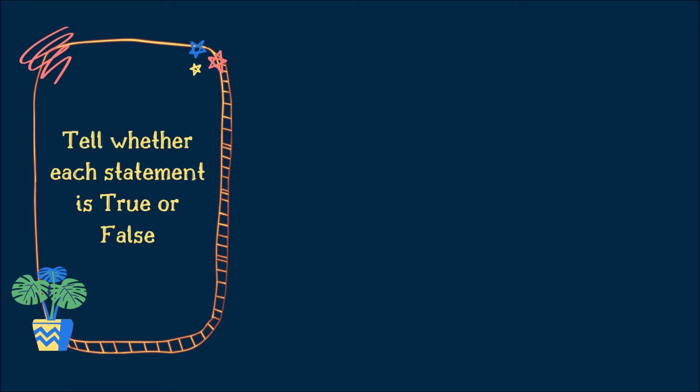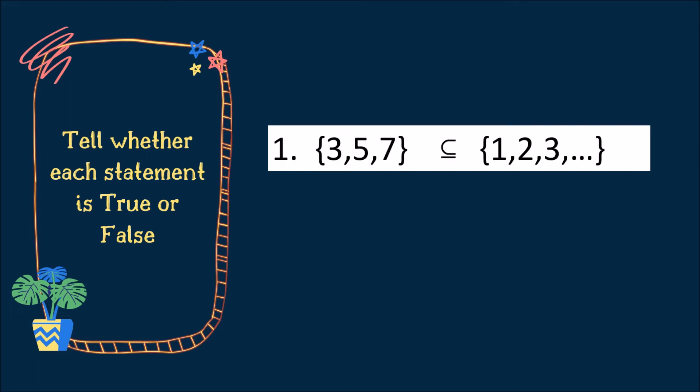Now let's have another set of activity. Tell whether each statement is true or false. Number 1. Set with elements 3, 5, and 7 is a subset of 1, 2, 3, up to infinity. Is it true or false? Good job! The answer is true.